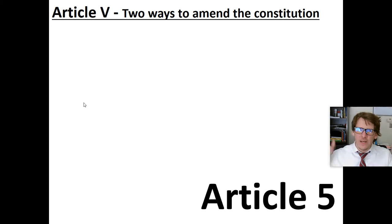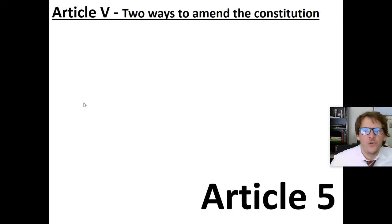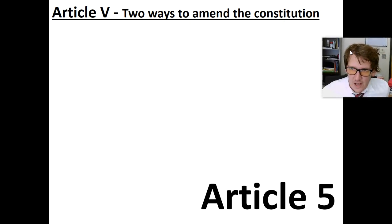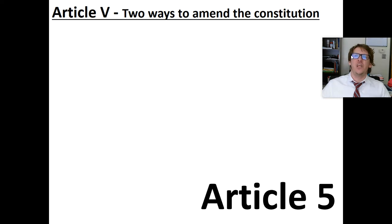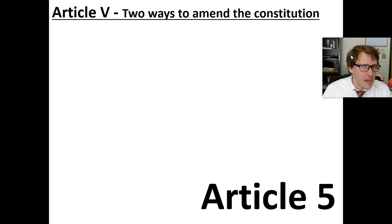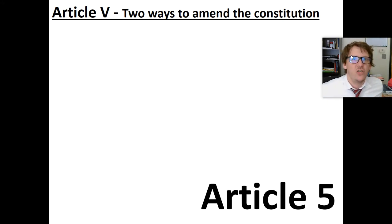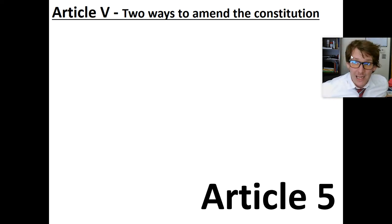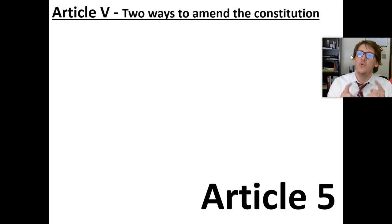Article 5. There are two ways to amend or change the Constitution. Going back to that idea — Hillary Clinton won the popular vote, why isn't she president? Because the popular vote does not matter. We have an Electoral College according to the Constitution, and the Electoral College, based on state populations, elects our presidents. That's the way it is. Now, if you want to change that, you can — you have to change the Constitution.